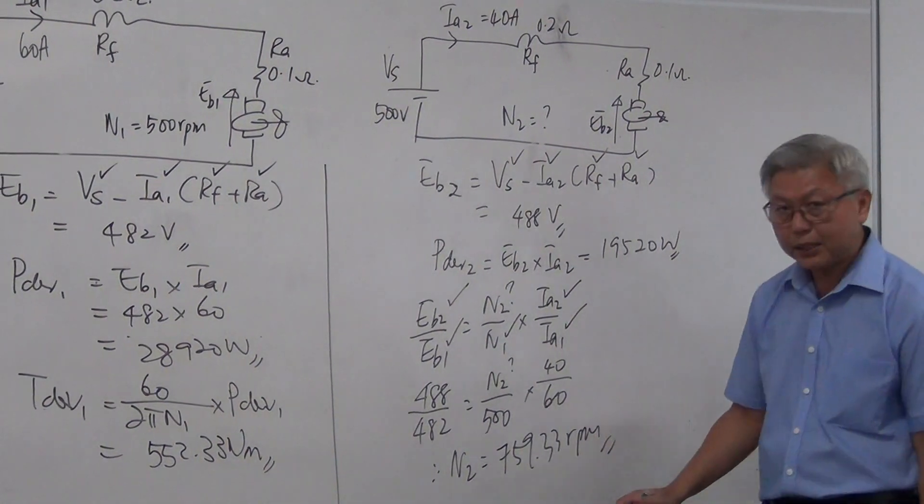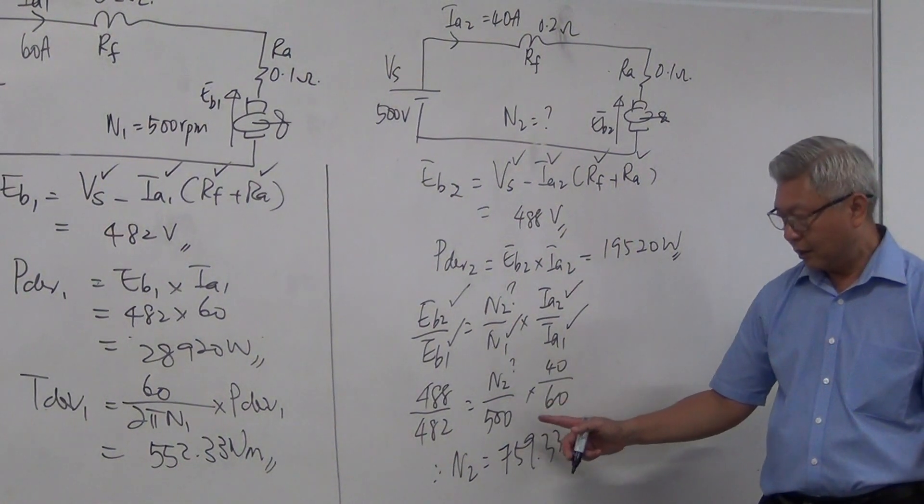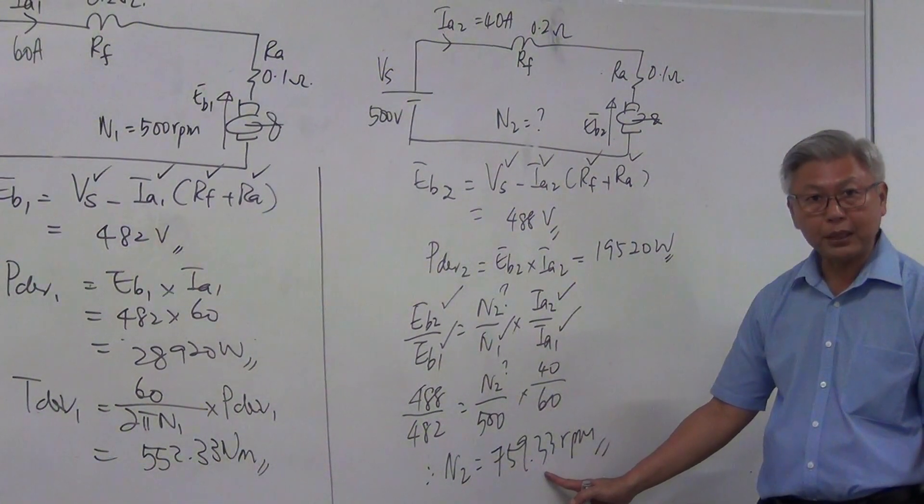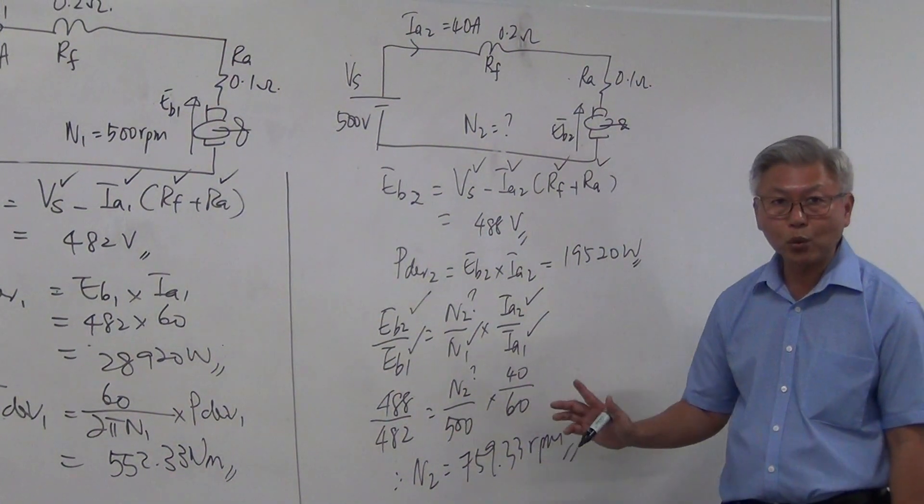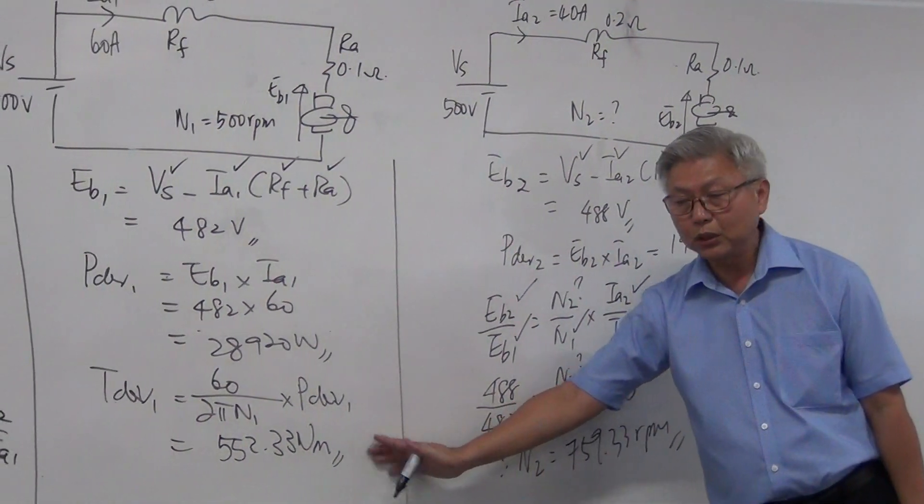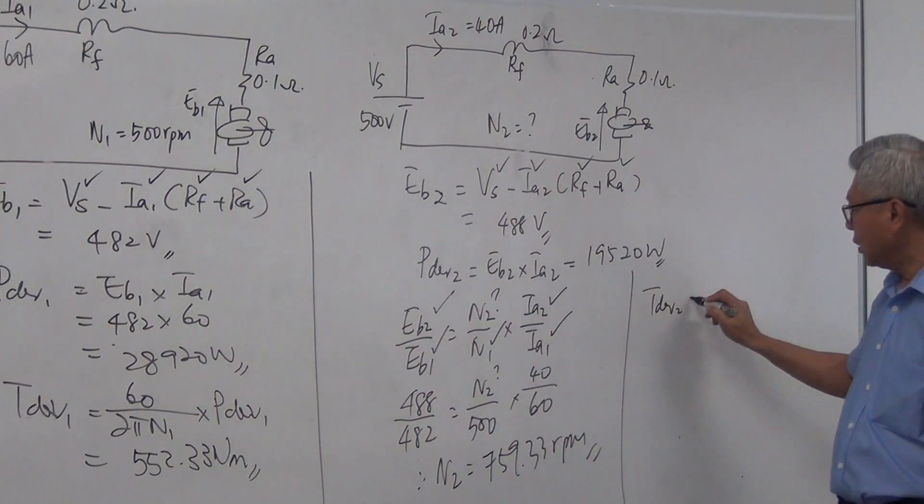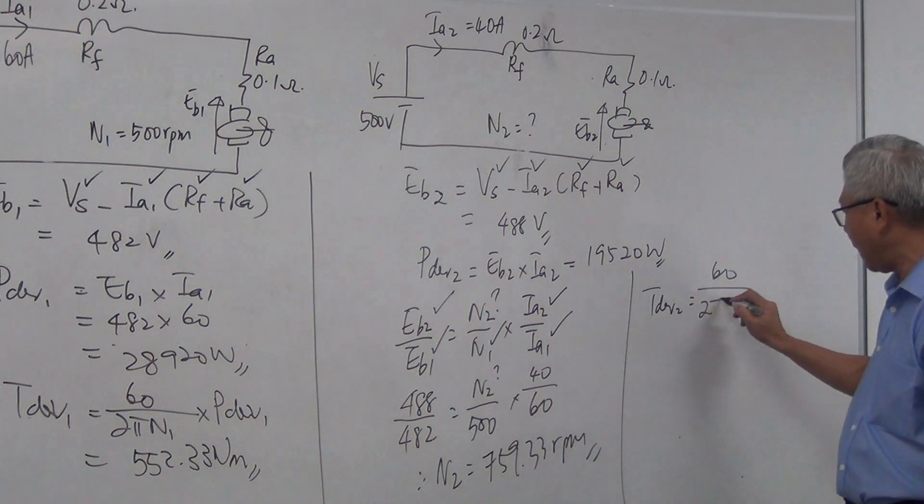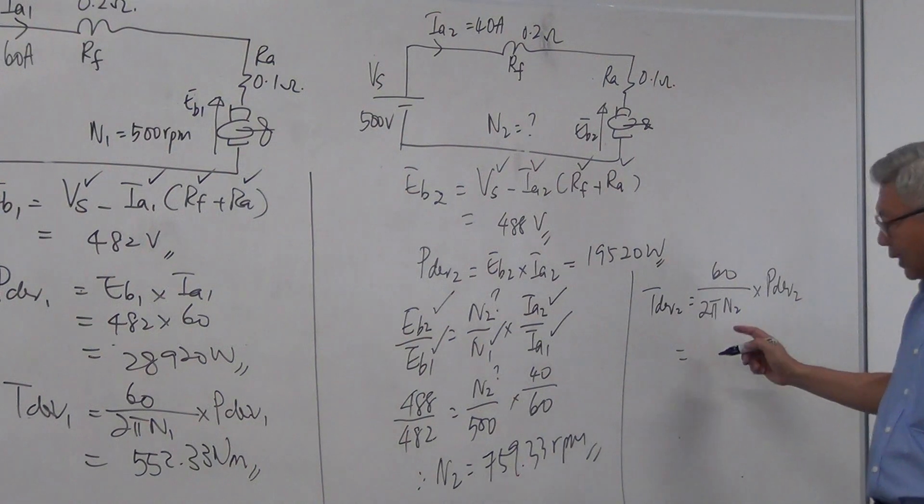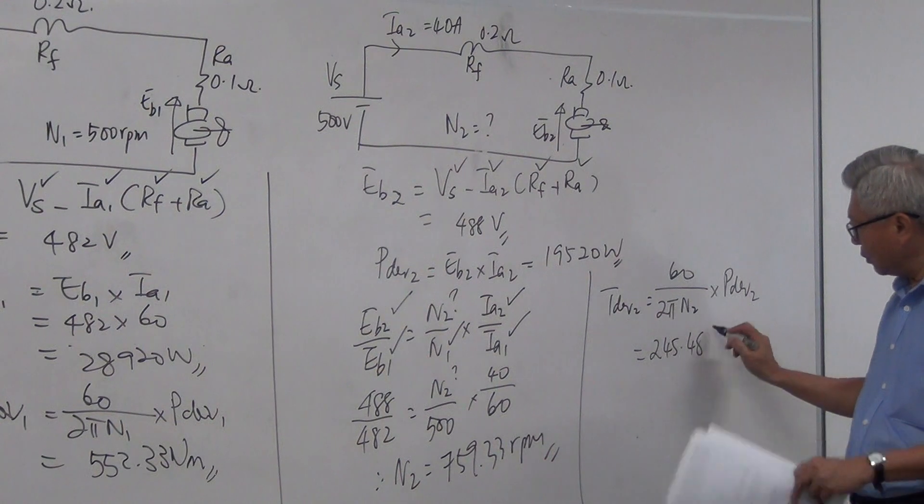Can you see? There is now a lot of changes in the speed with the change in torque. It was 500 RPM, but now it's 759.33 RPM. So this is the difference between shunt motor and series motor. And the original torque was 552 Nm. How about this new torque now? If I were to calculate the new torque using 60 divided by 2 pi N2 multiplied by power developed 2 formula and substitute the values, I would get 245.48 Nm. So that is the difference in the torque, and also a big difference in the speed.